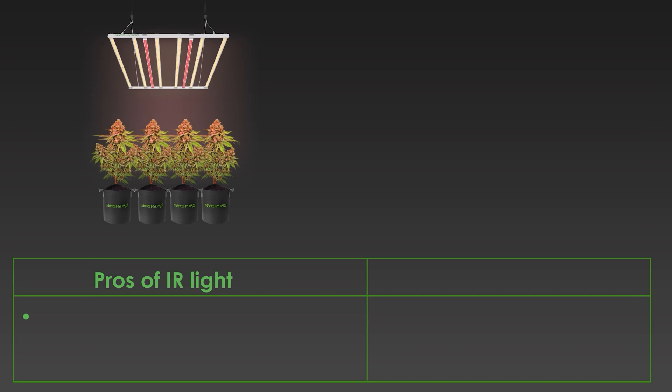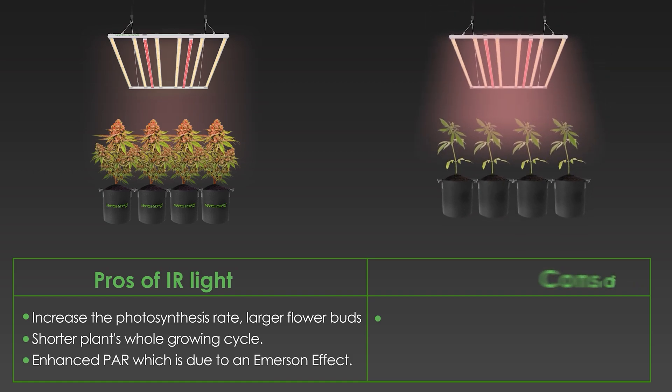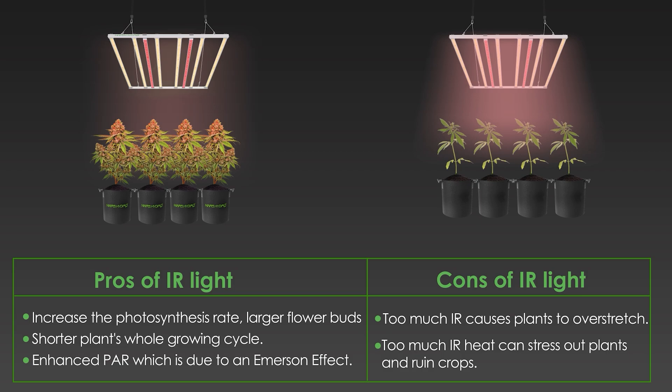The pros of IR light include increased photosynthesis rate with larger flower buds, a shortened growing cycle of plants, and enhanced photosynthetically active radiation, or PAR. However, too much IR light can make plants overstretch and even stress plants out, which can lead to ruined crops.